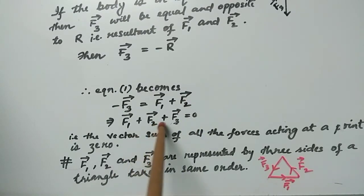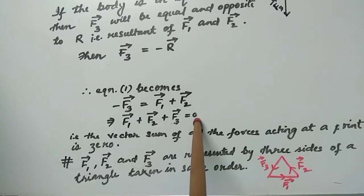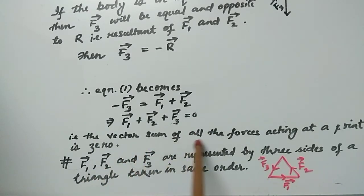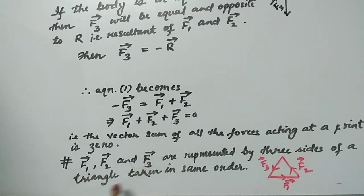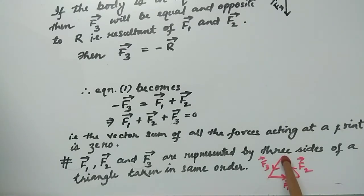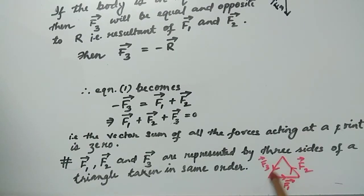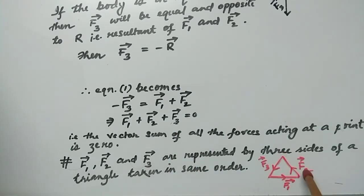That is, the vector sum of all the forces acting at a point is zero. The particular result is that F1 vector, F2 vector, and F3 vector are represented by the three sides of a triangle taken in the same order — with arrows in the same direction around the triangle. This confirms the triangle law of vector addition for equilibrium.